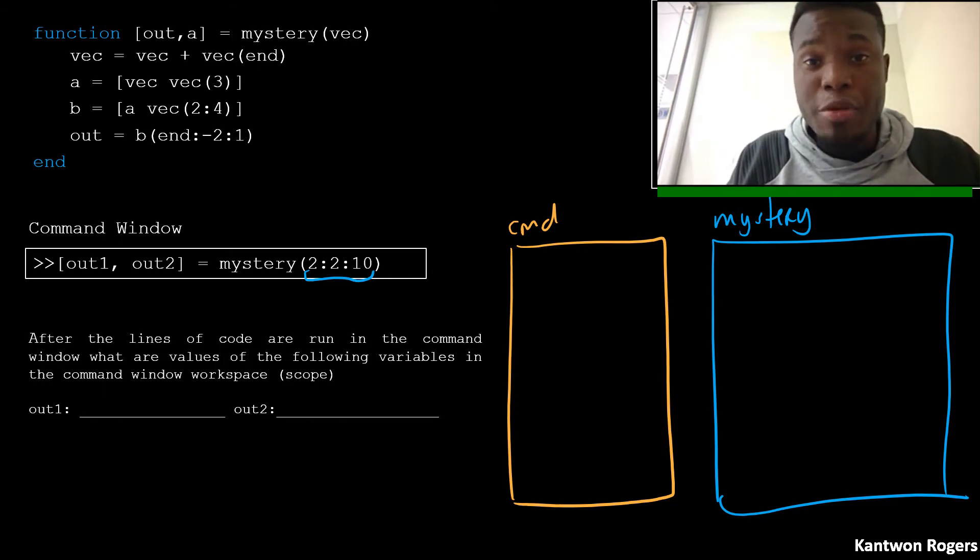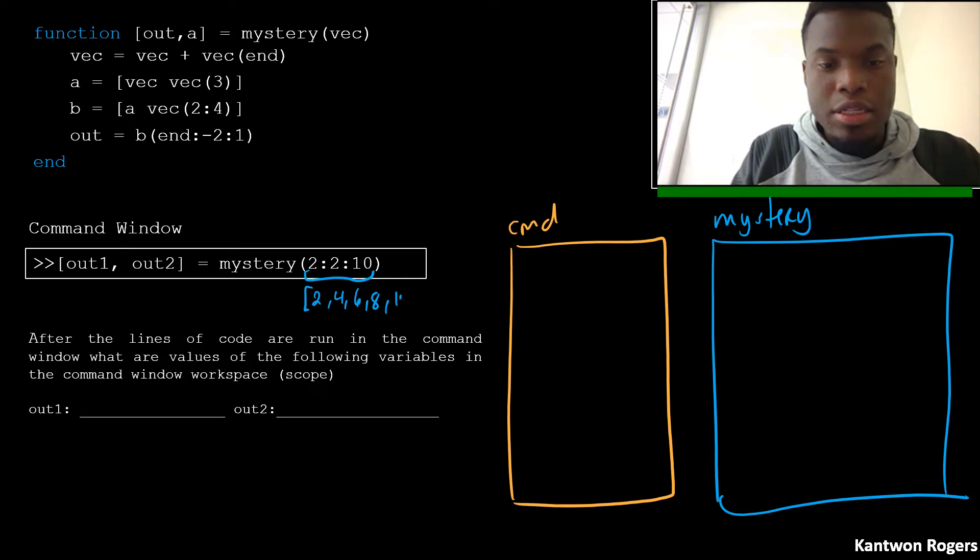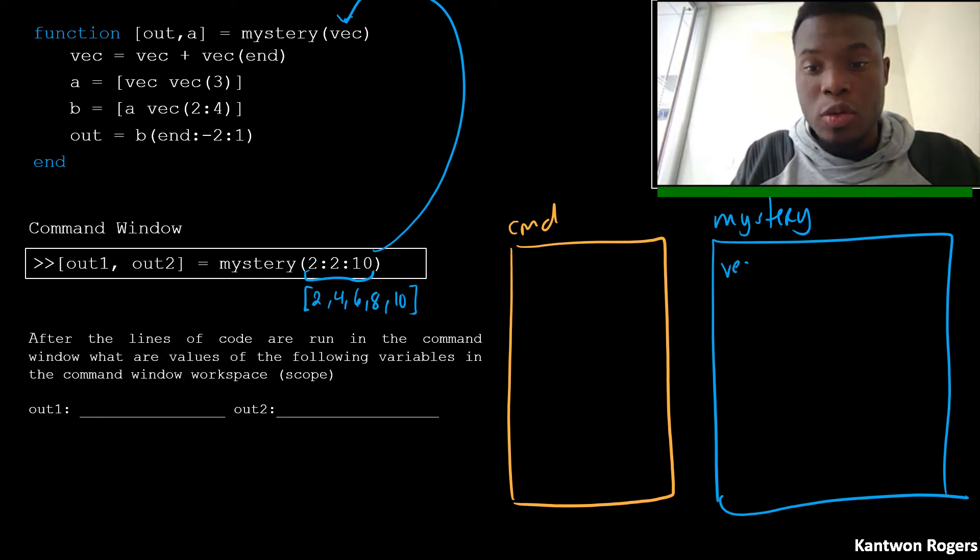We have our starting number is 2, our steps is 2, and our stopping number is 10. So therefore, this creates the vector 2, 4, 6, 8, and 10. So this is what's placed inside of our mystery function and what is placed inside of the variable vec. We create a variable vec and its values 2, 4, 6, 8, and 10.